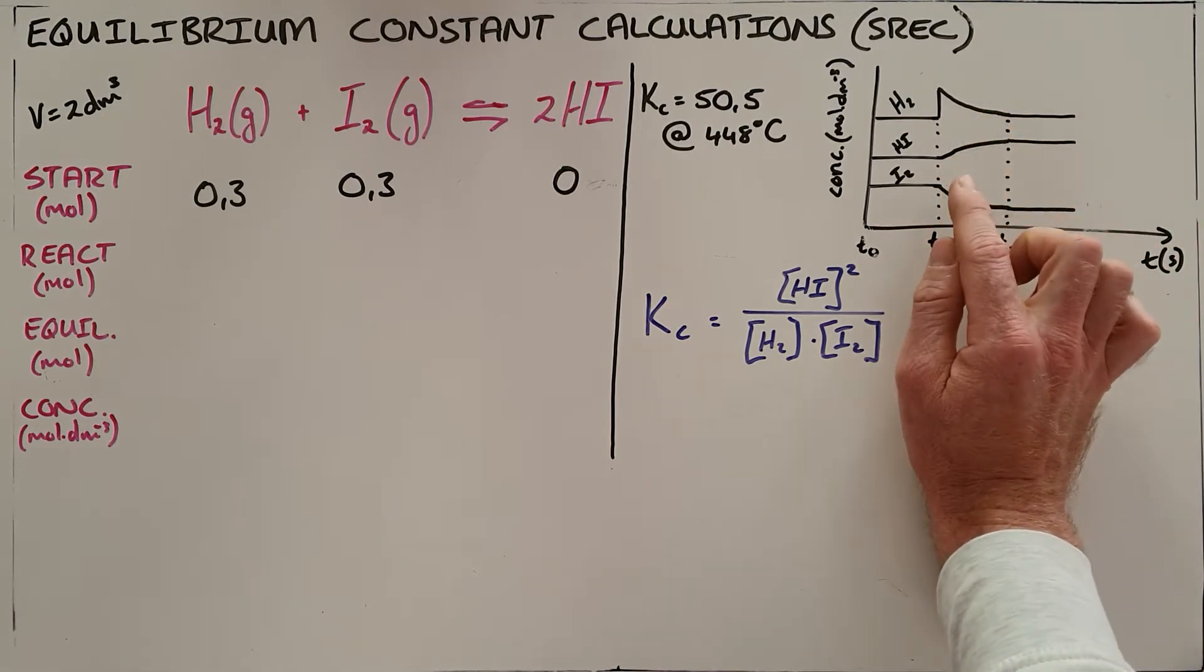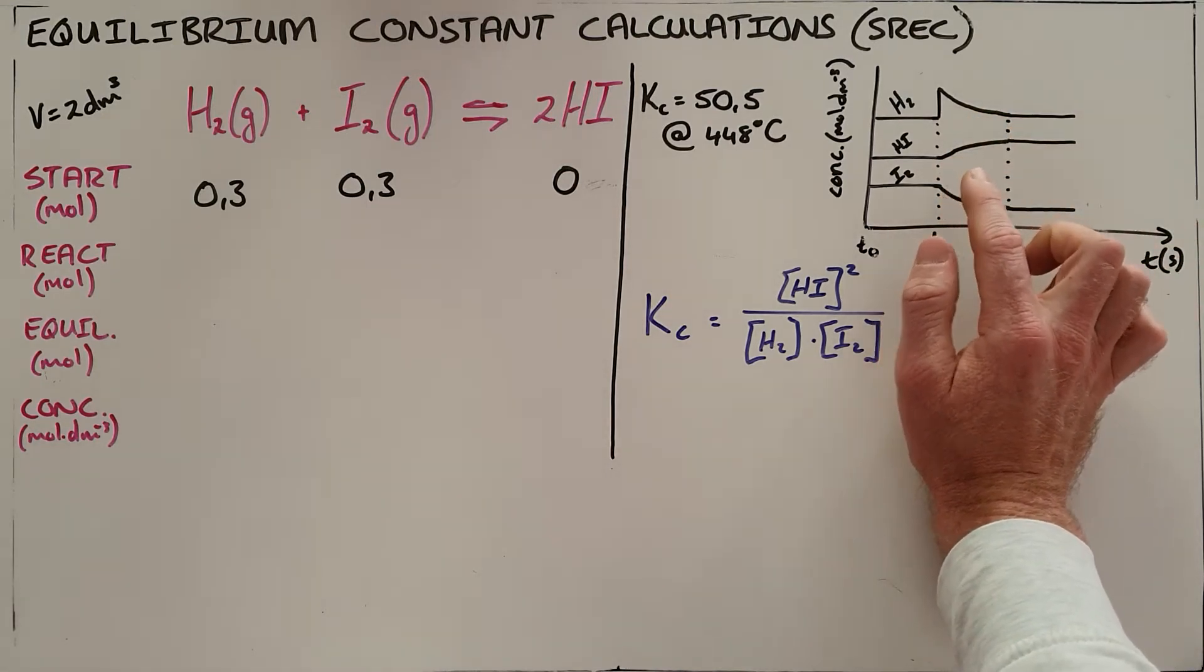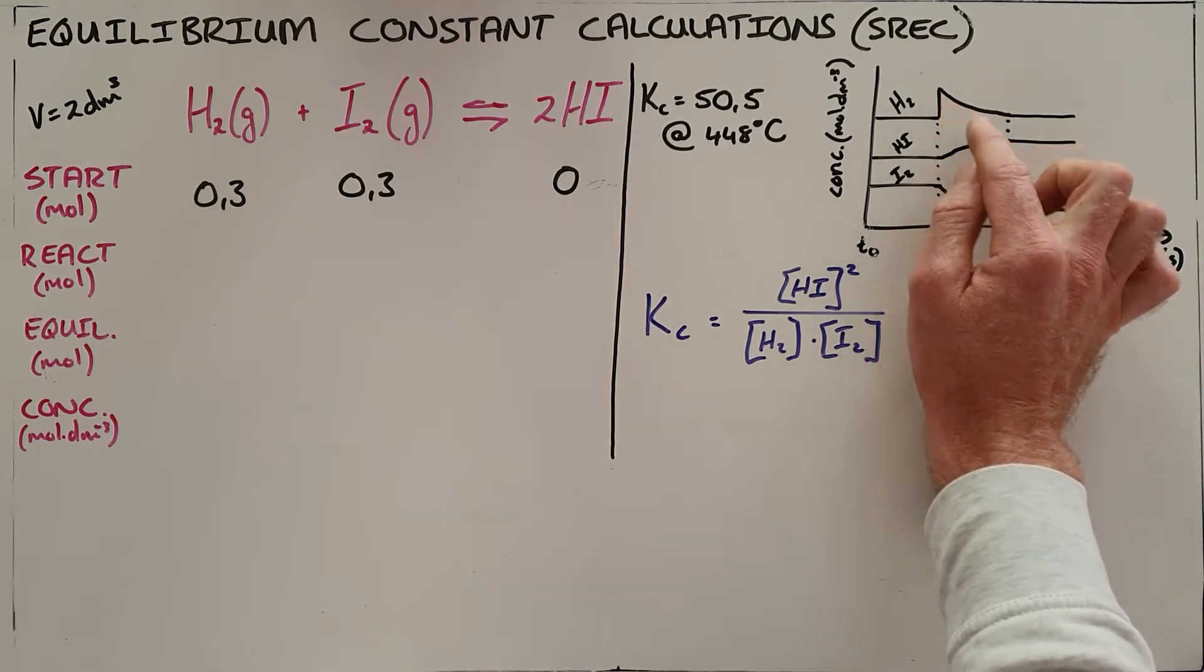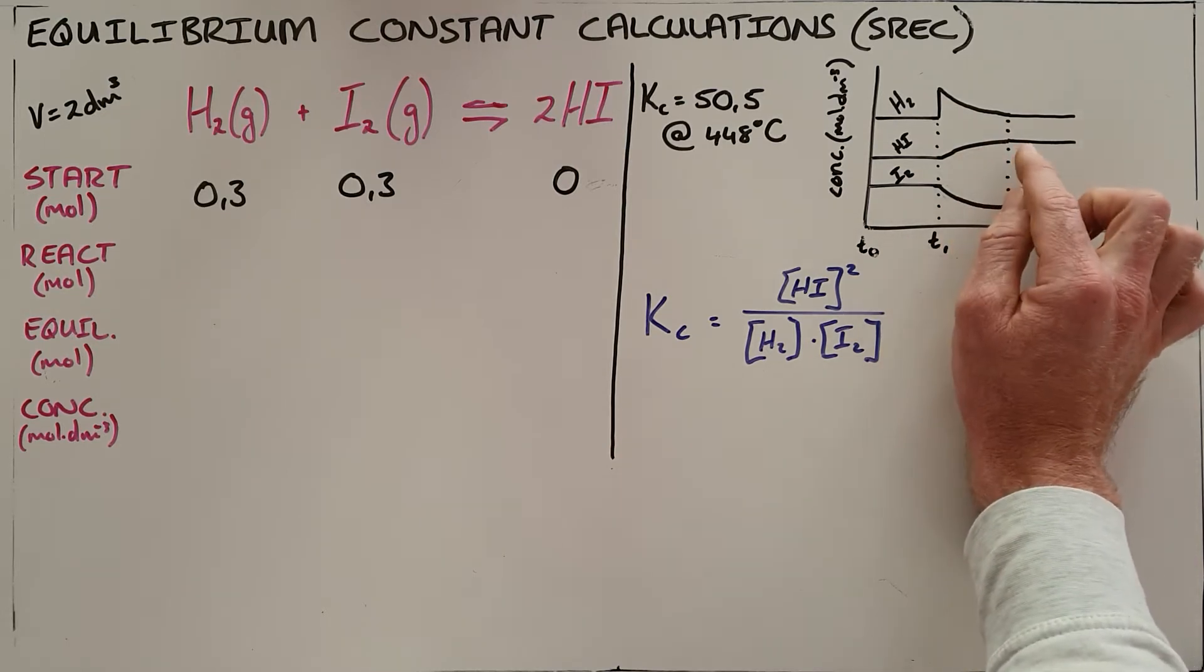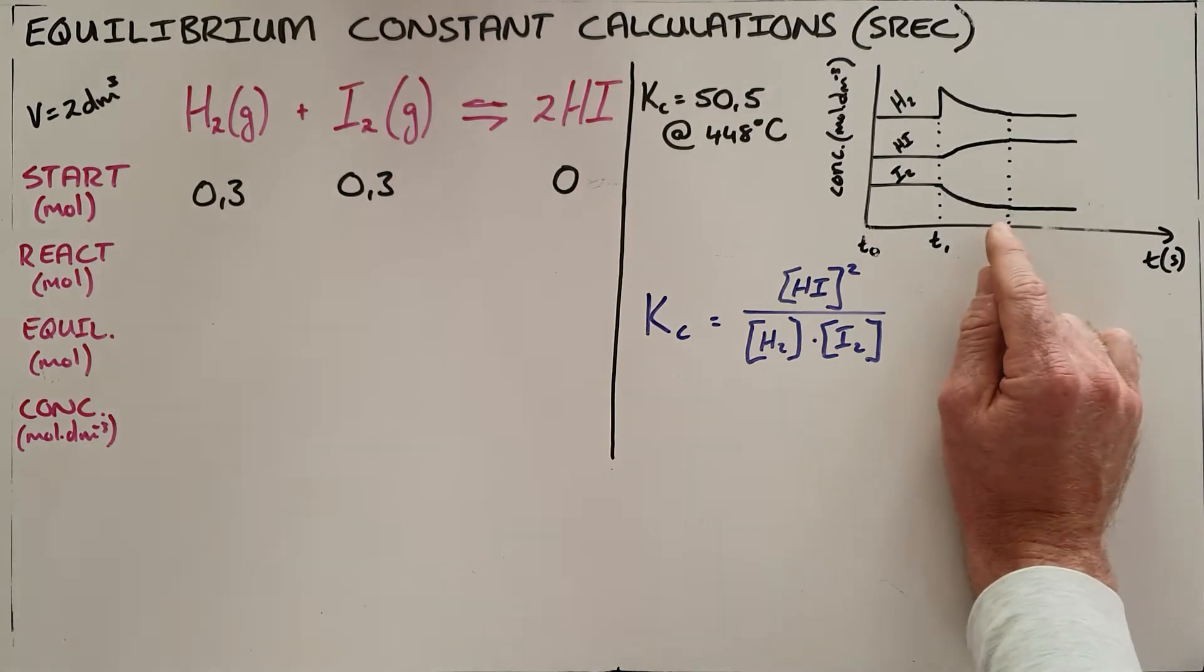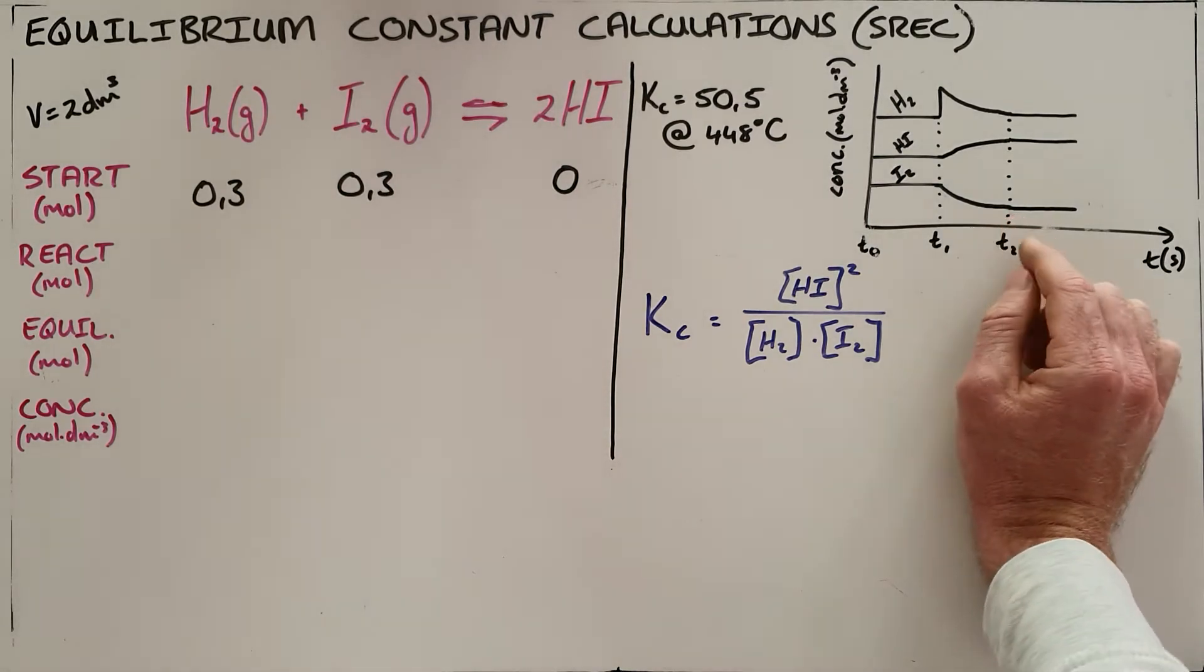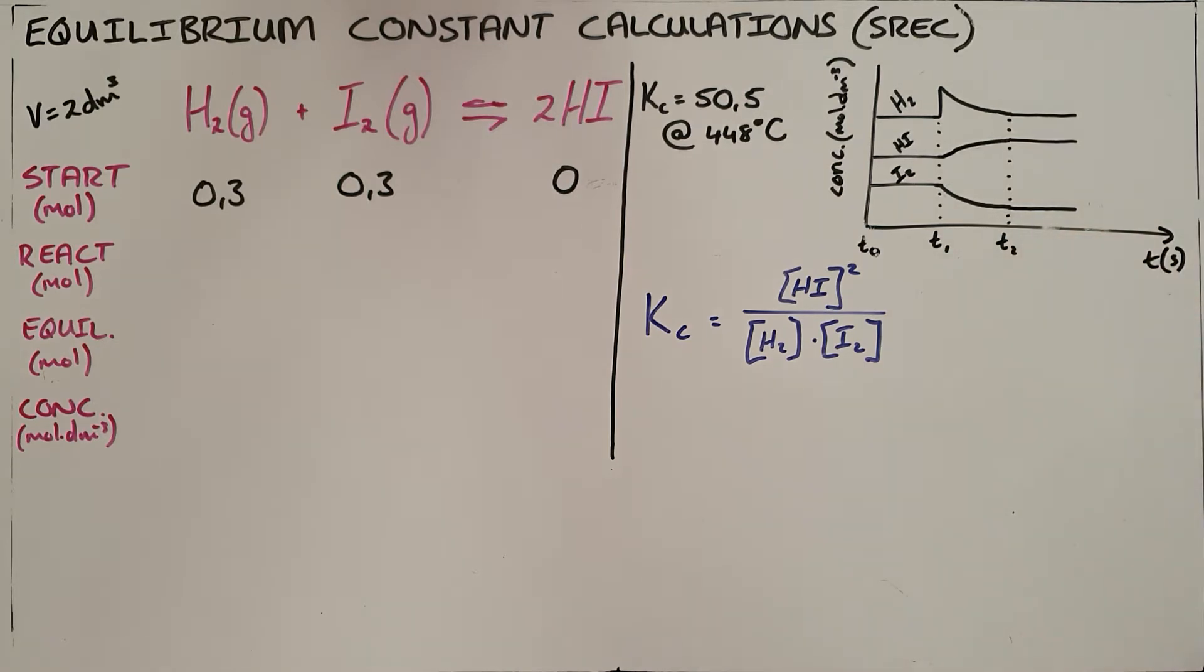Le Chatelier's principle says we favor the direction that undoes that change. We can see the forward reaction is favored, which decreases hydrogen and iodine while increasing hydrogen iodide. From T2 onwards, the concentrations remain constant, so the reaction is again at equilibrium.